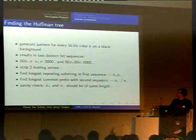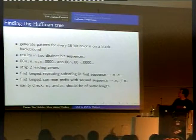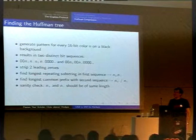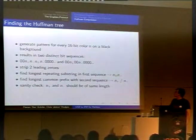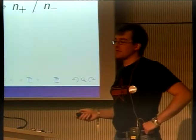And when we now strip the leading two 0s and try to find the longest repeating substring here, then we end up with the sequence for just plus n minus n. And this now we can compare with this sequence and find the longest common prefix. And when we also have found this, then we get the two separate sequences, plus n and minus n.